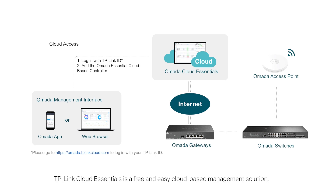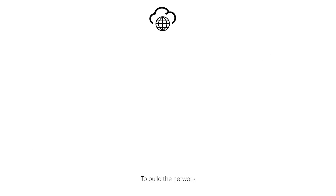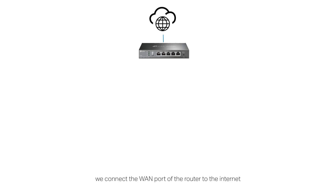TP-Link Cloud Essentials is a free and easy cloud-based management solution. This video introduces how to set it up with the Omada app. This is a typical topology to build the network — we connect one port of the router to the internet, and the LAN port of the gateway to the switch.